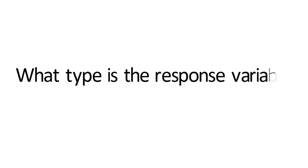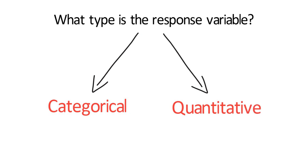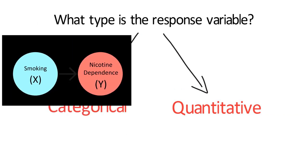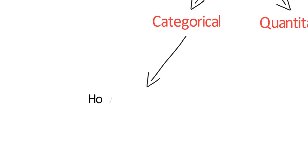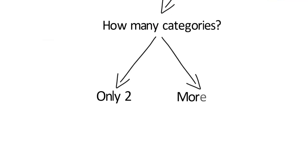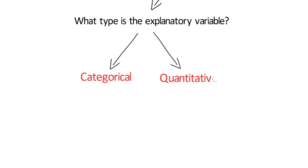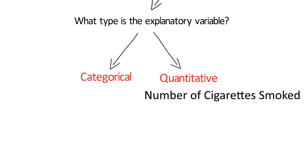The first question is: what type is the response variable — is it categorical or quantitative? For our sample research question, the response or dependent variable is nicotine dependence, which is categorical. Since nicotine dependence is coded 1 for yes or present and 0 for no or absent, we have two categories in the response variable. The next question to ask is what type is the explanatory variable. The explanatory or independent variable is number of cigarettes smoked per month, which as we saw in the demonstration of histograms, is a quantitative variable.